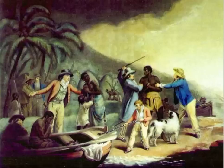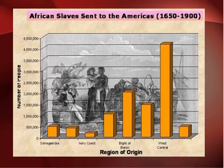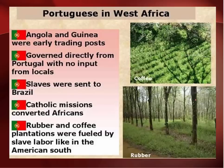Here we see a depiction of slaves being taken in the West Indies, and we can see how many slaves were being sent to the Americas and the region of Africa — the most were coming from the West Coast of Africa. The Portuguese set up ports in East Africa; Angola and Guinea were early trading posts, governed directly from Portugal with no input from the locals. Slaves were sent from these areas to Brazil. With the King of the Congo converting to Christianity, there were a lot of Catholic missionaries being sent to convert the people.